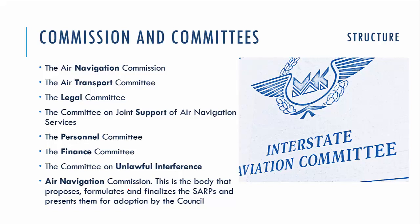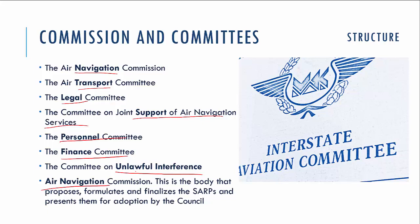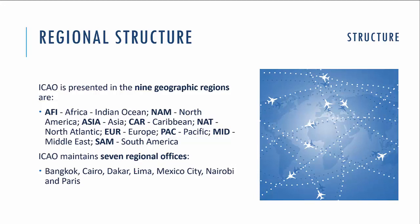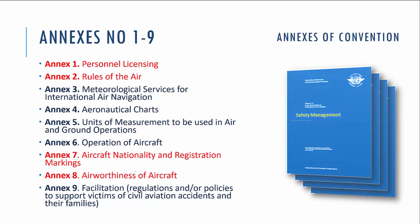The various committees and commissions work on each field of ICAO's functioning. Because ICAO operates worldwide, it is present in nine geographical regions, and maintains seven regional offices located in Bangkok, Cairo, Dakar, Lima, Mexico City, Nairobi, and Paris.